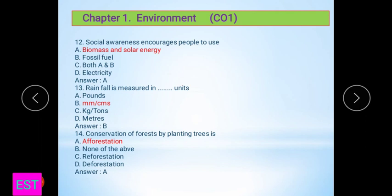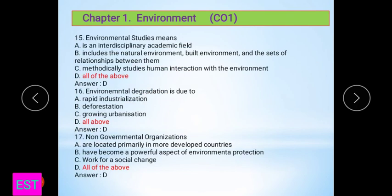Fourteen question: The conservation of forest by planting trees is called afforestation. Next question: Environmental study means - it is interdisciplinary academic field, includes the natural environment and built environment and sets up relationship between them, methodological study of human interaction with the environment. That's why all of the above option is correct.